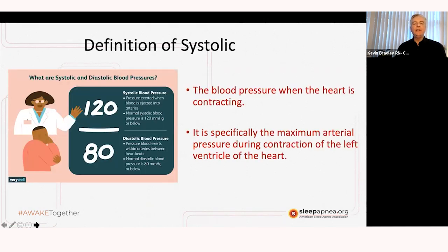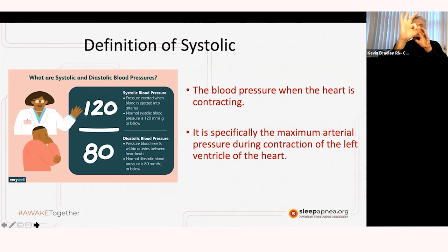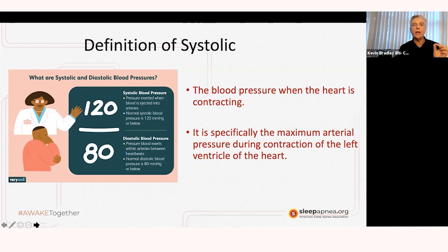When we talk about the definition of systolic blood pressure, it's basically the pressure when the heart is contracting. The heart is pumping against a resistance — that resistance is your arteries. If the hose is wide and the tap is turned on a little bit, the pressure isn't that high. But if that hose becomes decreased in size and the tap stays the same, you're going to get a higher pressure. That's what the heart is doing against the resistance of the arteries — that's systolic blood pressure.